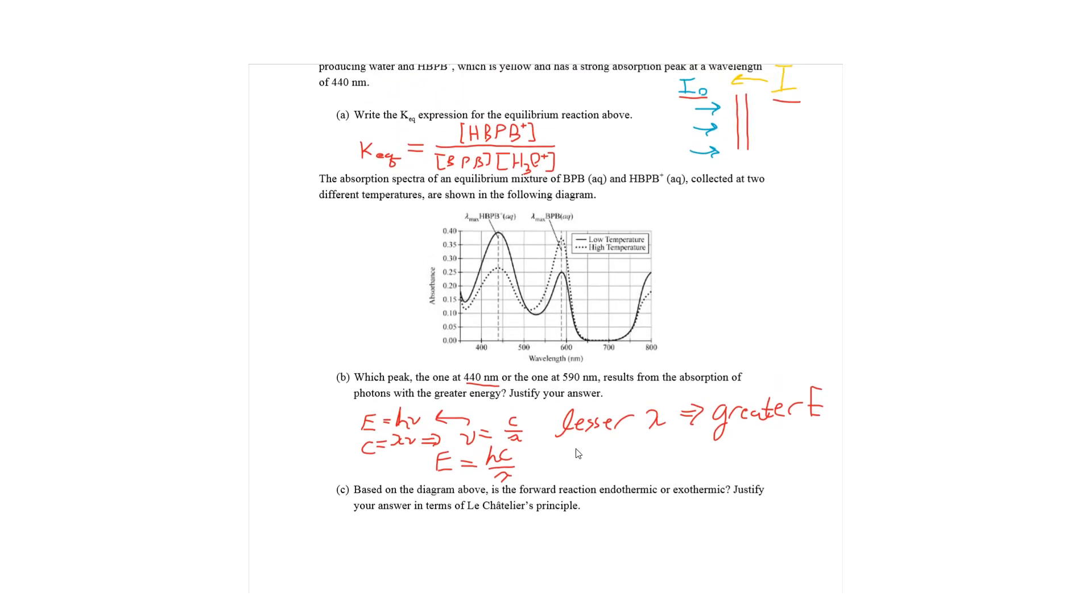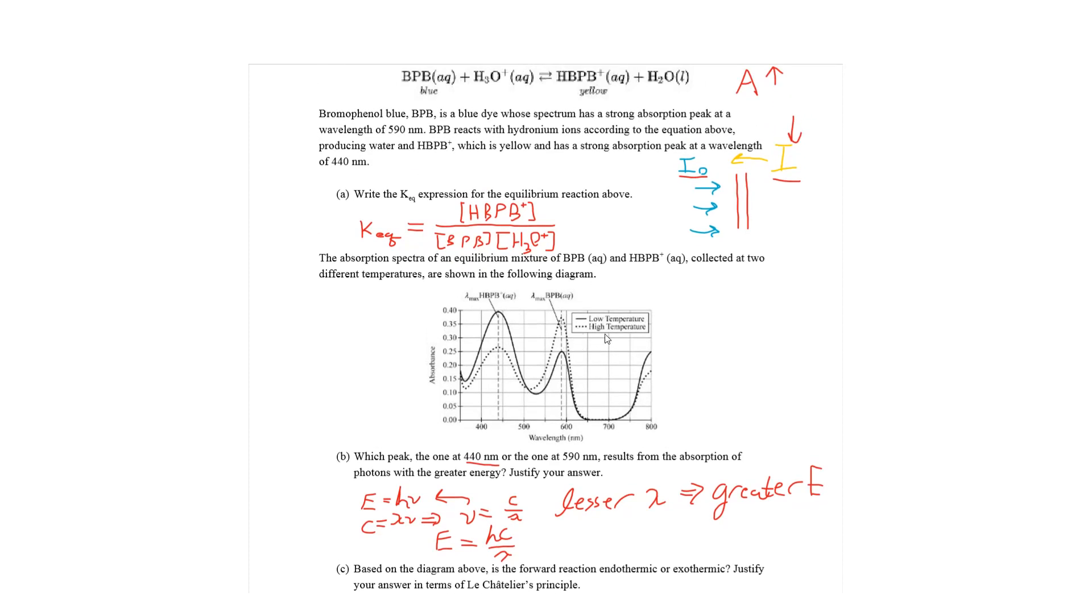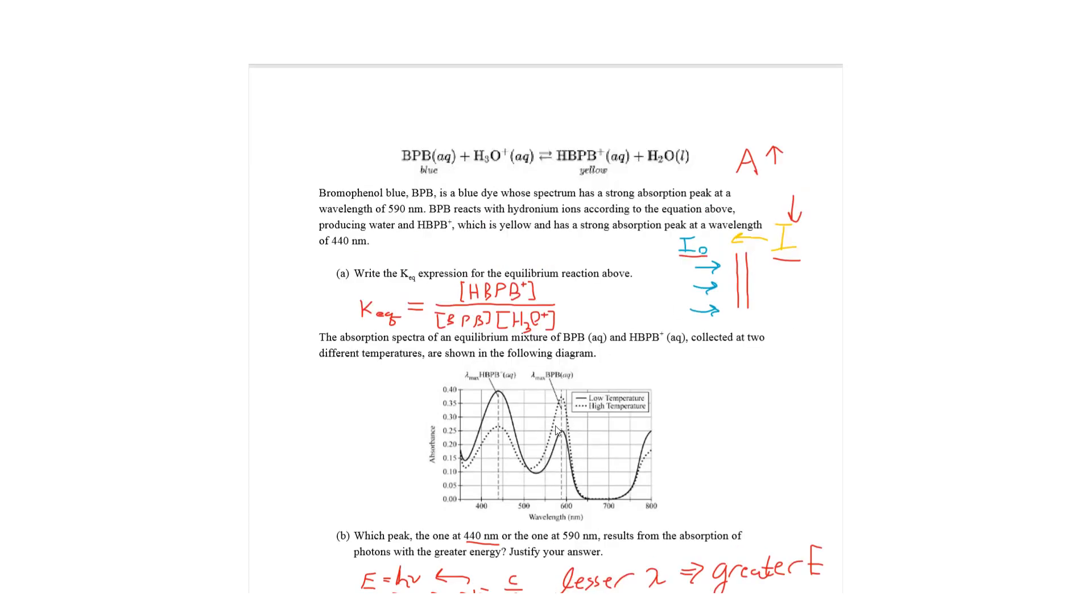Part C: Based on the diagram above, is the forward reaction endothermic or exothermic? Justify your answer in terms of Le Chatelier's principle. So, we only have to look at one of these peaks to understand what's happening chemically. So, we're going to pick the one that has the reactant on it. You can pick either one, and it would still work out just fine.